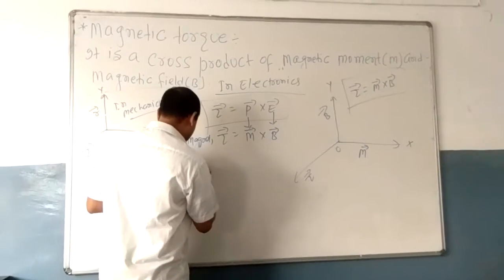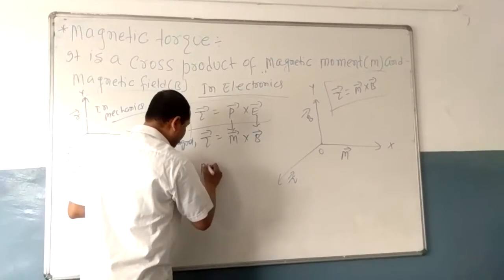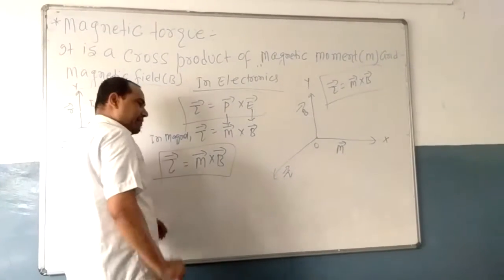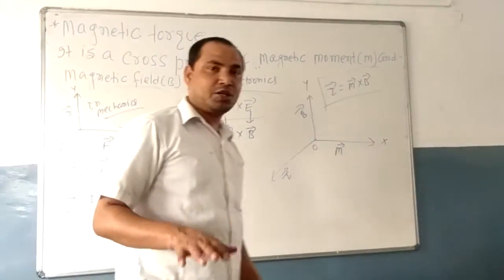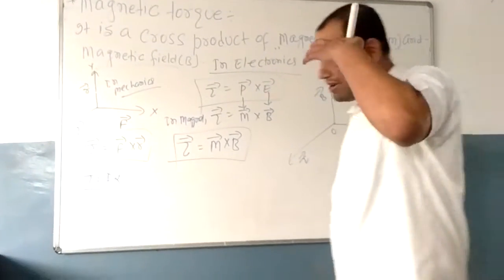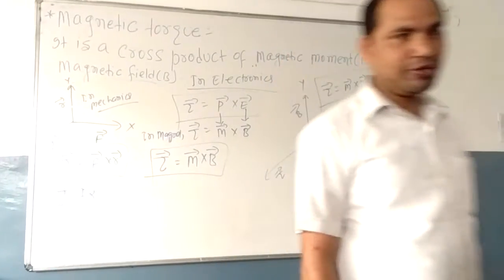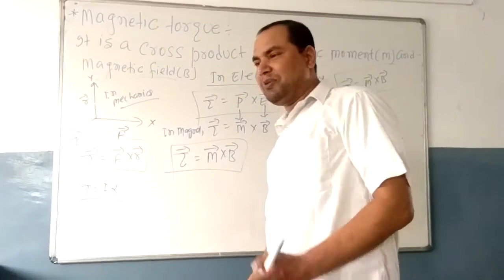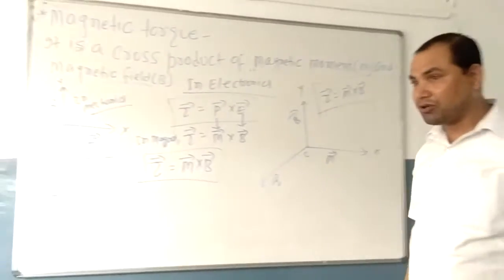Therefore, the torque is equal to the cross product of magnetic dipole moment and magnetic field. Magnetic torque equals M cross B. Expanding this: torque equals M·B·sinθ·n̂. For maximum torque, the angle between M and B should be 90 degrees, so sin 90° = 1, and torque will be equal to M·B.